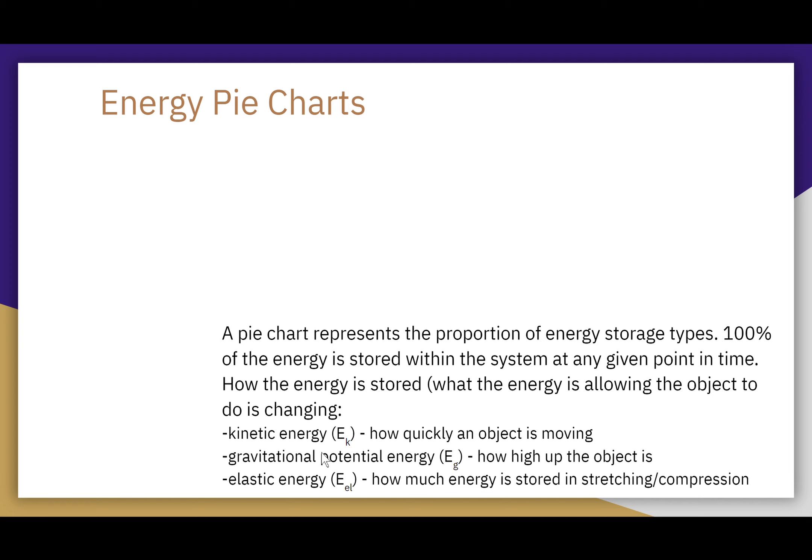We're going to focus on four different points along the motion of this ball. The pie chart will represent the proportion of energy storage types. Because a pie chart tells you what proportion of the whole you have, 100% of the energy stored within the system at any given point in time must be accounted for. How that energy is stored — what the energy allows the object to do — will be changing.